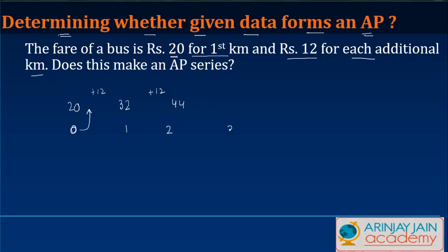Then as you reach 3, 4 and 5 km and so on, every time you pay Rs.12 more per km, so it becomes 56, then 68, then 80. I keep on adding 12 every time.